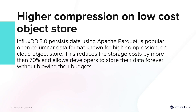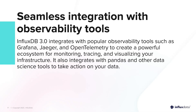Higher compression on low-cost object storage: InfluxDB 3.0 persists data using the Apache Parquet file format, a popular open columnar data format known for its high compression. This reduces storage costs by more than 70% and allows developers to store their data forever without blowing their budgets. This is very important because many people need to store very granular data — knowing every single second's value for the past month — at a much lower cost. Previously you might have needed to downsample to reduce storage, but that will no longer be a problem.